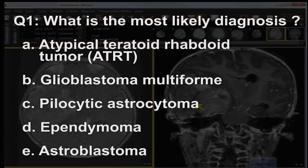GBM may rarely de-differentiate from pontine astrocytoma, but this lesion is not in the pons. Pilocytic astrocytoma is classically seen in young individuals in the posterior fossa, typically cystic with an enhancing nodule — not this aggressive, and it does not diffusion restrict. Ependymoma when supratentorial and parenchymal is an adult diagnosis, not seen in a one-, two-, or three-year-old.